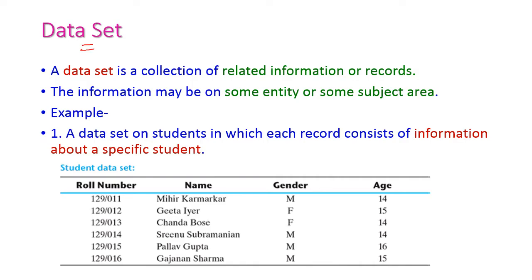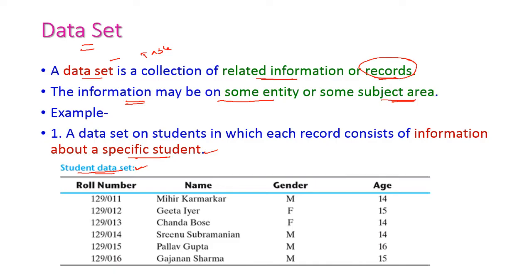First, let us see what is a dataset. A dataset is a collection of related information, which are otherwise called as records. That is, the collection of records is called a dataset. Sometimes it is also called a data table. The information may be about some entity or some subject area. For example, a student dataset is the collection of information related to specific students. This dataset contains six students' information — six records.